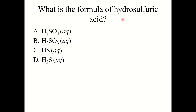Quick knowledge check: what is the formula of hydrosulfuric acid? The correct answer is D: H2S(aq). Hydrosulfuric refers to sulfide; sulfide is S²⁻, so we need two hydrogens to make it neutral, then add the state of matter symbol (aq).